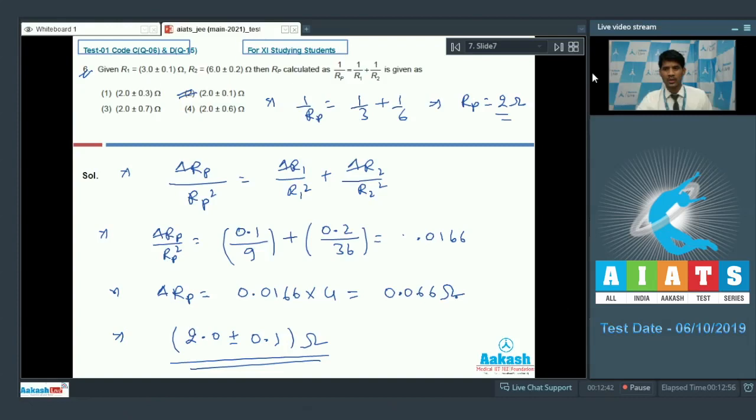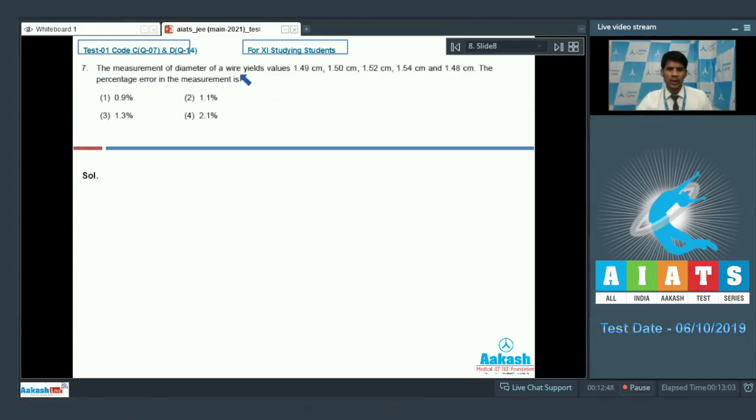Now let us proceed to question number 7. The measurements of diameter of a wire yields value 1.49, 1.50 cm, 1.52 cm, 1.54 and 1.48 cm. The percentage error in the measurements. The method is quite simple.